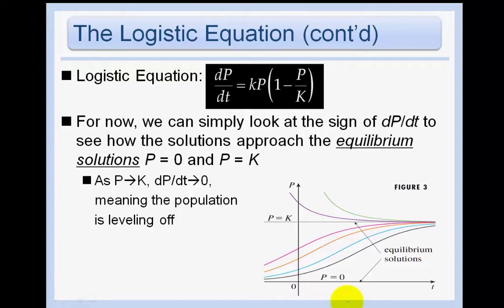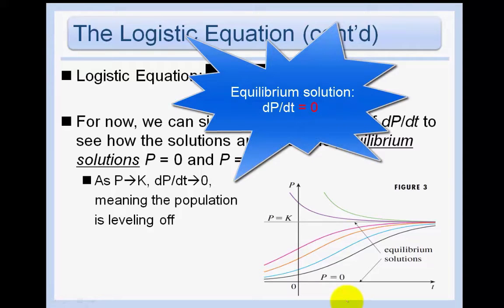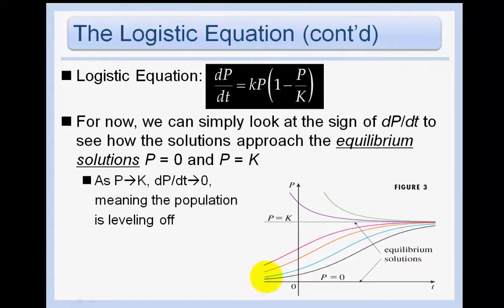So dp/dt = kp(1 - p/K) is the logistic equation. We can look at the sign of dp/dt to see how the solution approaches the equilibrium solutions p = 0 and p = K. Equilibrium solutions just mean the derivative equals 0 — that's where it levels off. As p approaches K, dp/dt approaches 0, meaning the population is leveling off there. It's like an exponential model at the beginning and then it levels off.